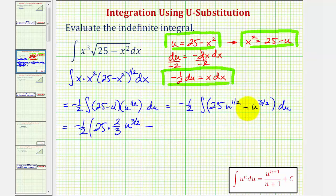minus the antiderivative of u to the three-halves would be u to the five-halves divided by five-halves, or two-fifths, times u to the five-halves.